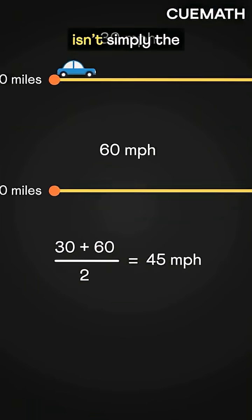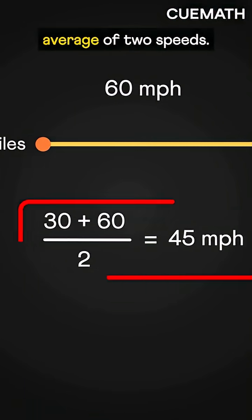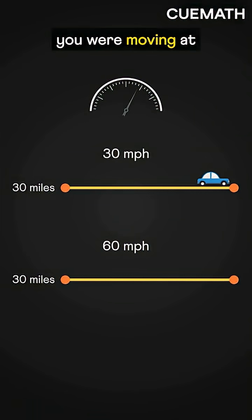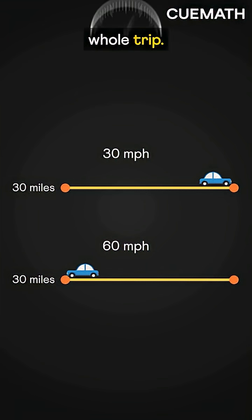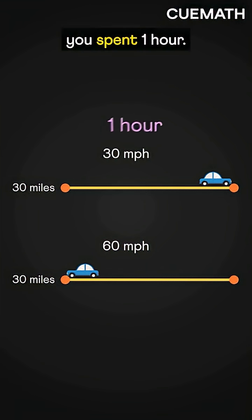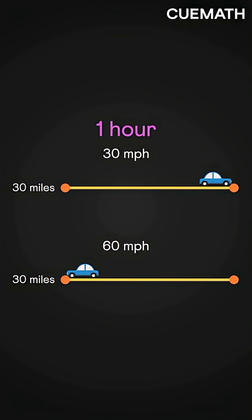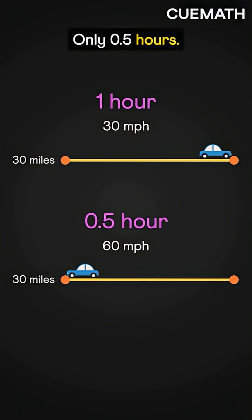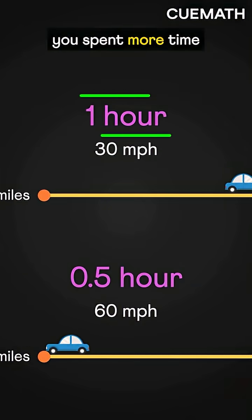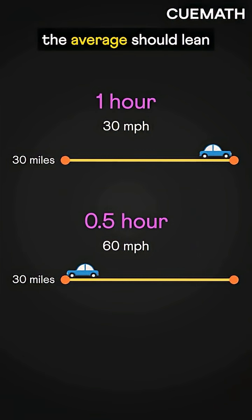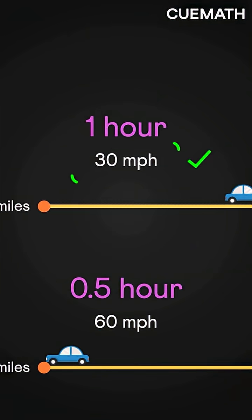But wait — average speed isn't simply the average of two speeds. It's the speed you were moving at on average for the whole trip. While going at 30 miles per hour, you spent one hour. But coming back at 60 miles per hour, only half an hour. So you spend more time at the slower speed, which means the average should lean closer to 30, not 60.